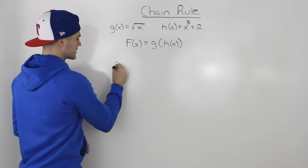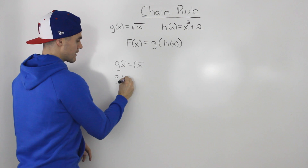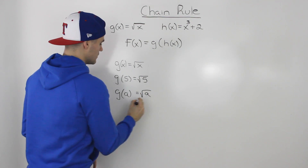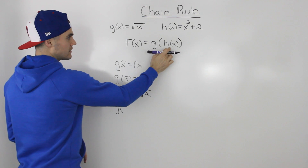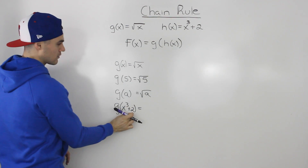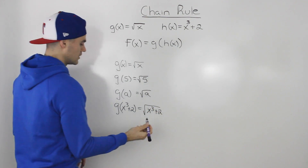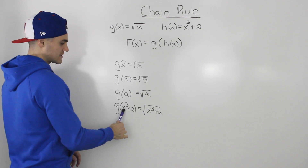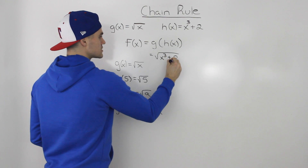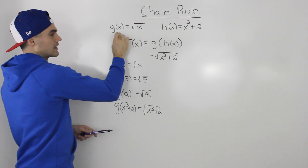Well, g of x is equal to the square root of x. That means g of five is equal to the square root of five, or g of a is equal to the square root of a. So for g of h of x, we know h of x is x to the power of three plus two. We would just plug x to the power of three plus two in for x. So g of h of x is the same as g of x to the power of three plus two, which equals the square root of x to the power of three plus two. Basically, the h of x expression is substituted in for the x in g of x.